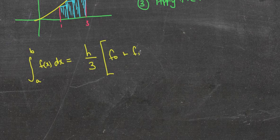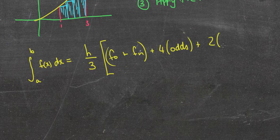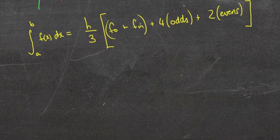Just like the trapezoidal rule, we have the function of the first plus the function of the last. But this time it's four times the function of the odds plus two times the function of the evens. Last time we just had two times all the middle numbers; this time we split those middle numbers up into odds and evens. It sounds confusing but trust me, it's not.